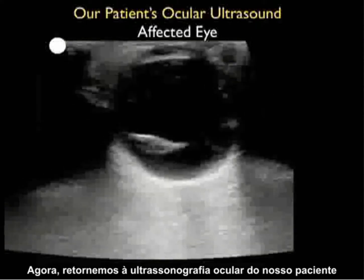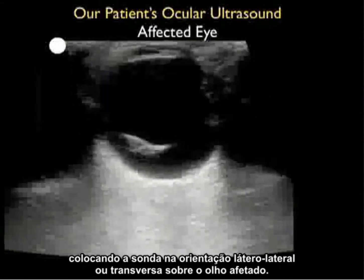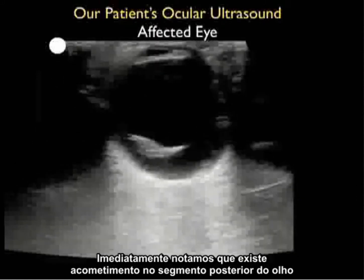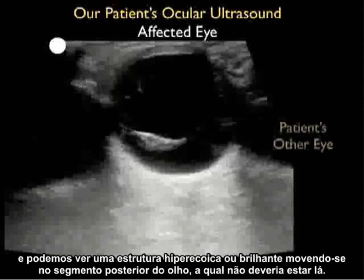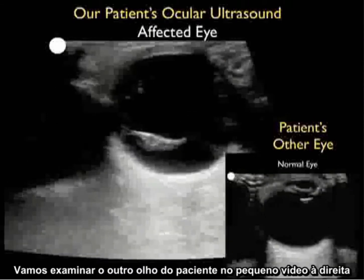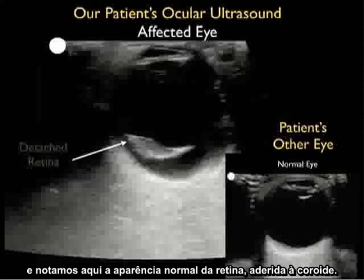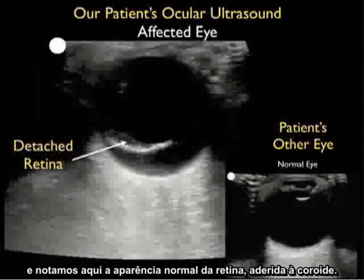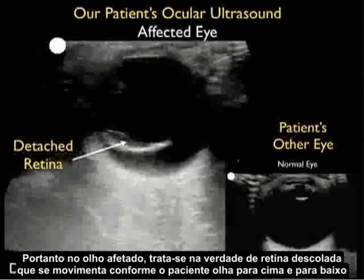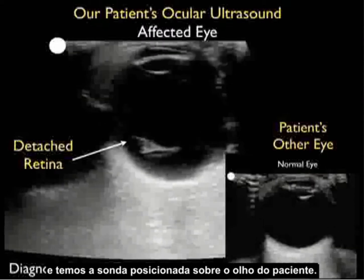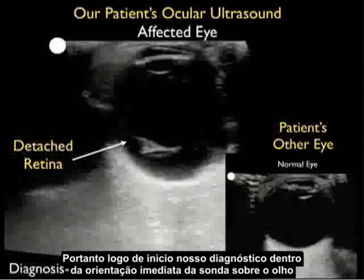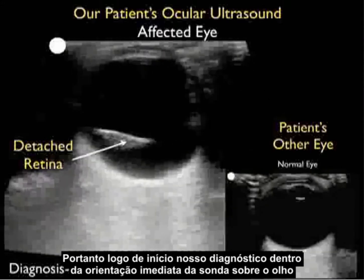Now let's return to our patient's ocular ultrasound, placing the probe in a side-to-side or transverse orientation over the affected eye. Right away we note pathology within the posterior aspect of the eye — a hyperechoic or bright structure waving around that should not be there. Looking at the patient's other eye we note the normal appearance of the retina tacked down to the choroid. In the affected eye, this is actually a detached retina moving around as the patient looks up and down. Our immediate diagnosis is retinal detachment.